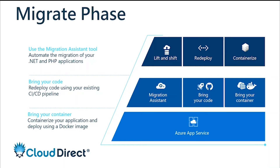Lift and shift to Azure and then using things like redeploying existing code with CI/CD pipelines is the next level — allowing you to start looking at more of the PaaS-based services and using App Service as part of that redeployment journey. And then bring your own container: fully Azure App Service where you containerize your application and deploy using a Docker image into Azure App Service, leveraging all the cloud-native tooling and connectors — things like AI and machine learning — as part of the App Service platform.